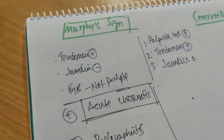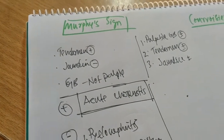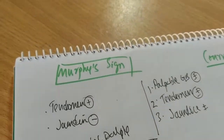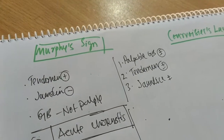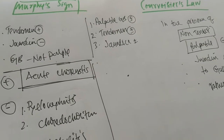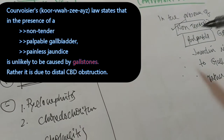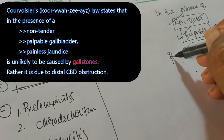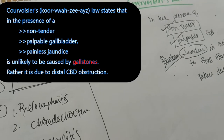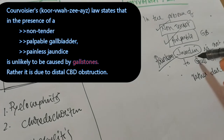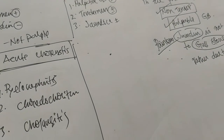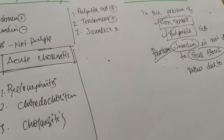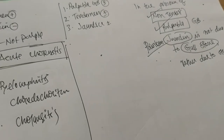Now, coming to Courvoisier's Law — Courvoisier was a great Swiss surgeon who first stated this principle. What is Courvoisier's Law? In the presence of a non-tender palpable gallbladder, the jaundice — and this jaundice is called painless jaundice — is not due to gallstone. Rather, this palpable non-tender gallbladder in a jaundiced patient is due to other pathology.